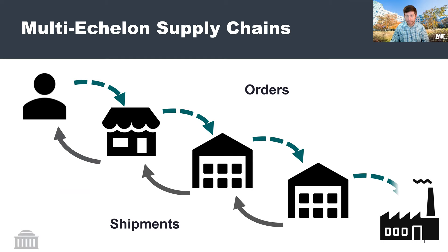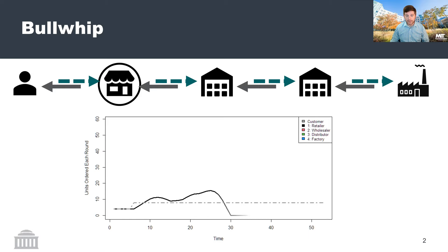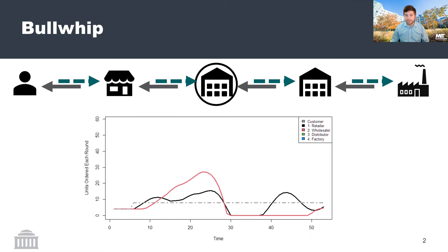When I talk about a multi-echelon supply chain, I also talk about bullwhip. Bullwhip refers to this phenomenon in which some sort of upstream perturbation in customer order signal results in increasing amplification and also shifts in time — specifically something referred to as phase shifts — as you move further and further away from that original perturbation in order signal.